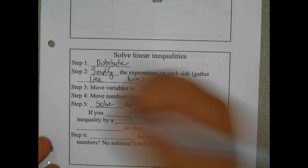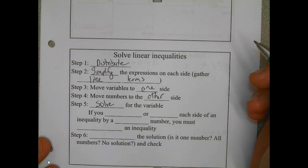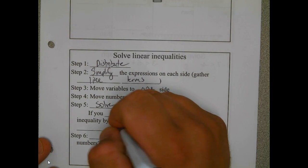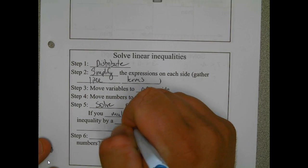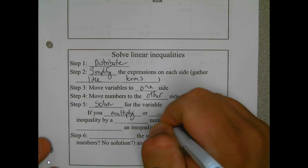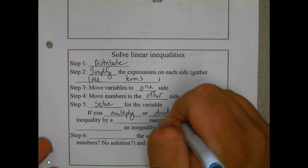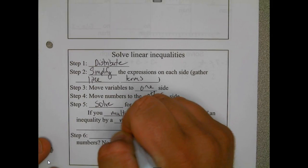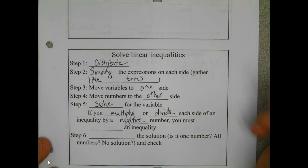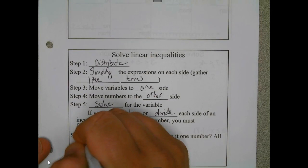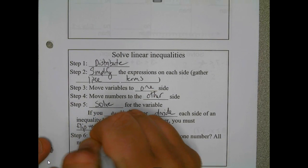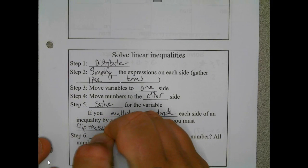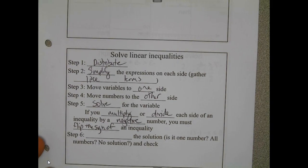One difference in inequalities is if you multiply or divide by a negative, you must flip the sign. So if it's less than and you multiply or divide by a negative, it's not really less than—it's greater than.